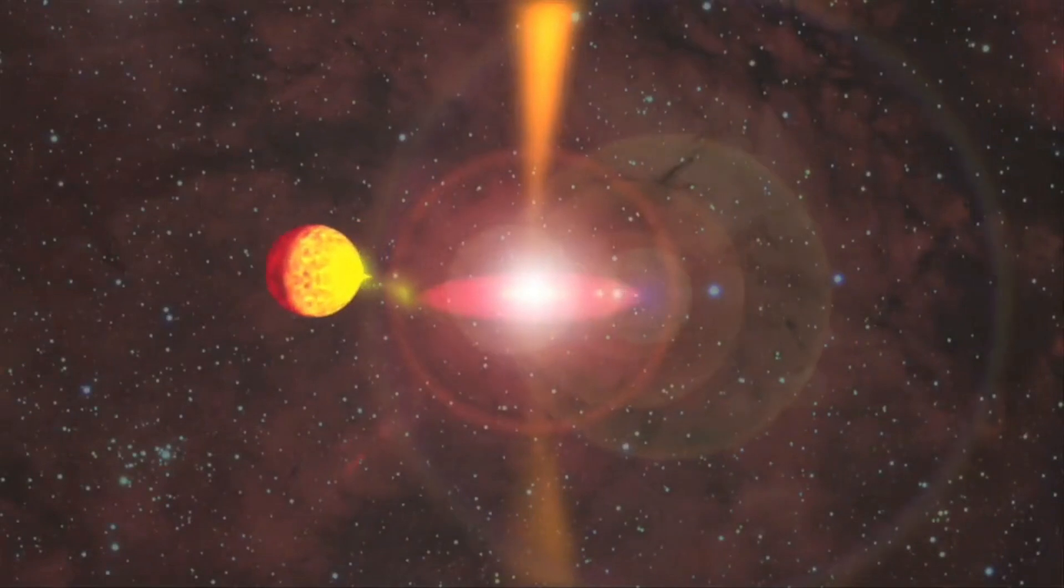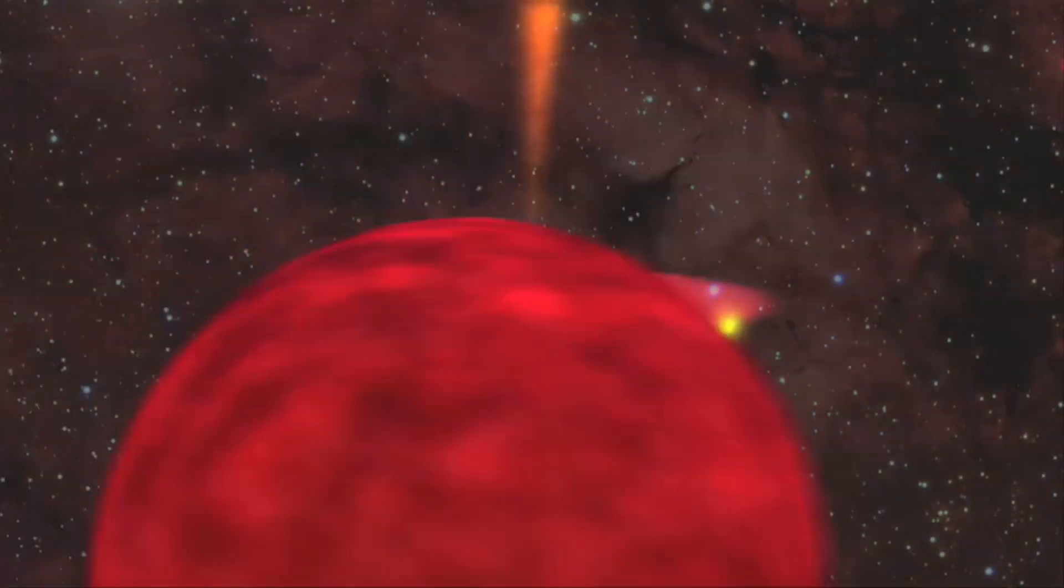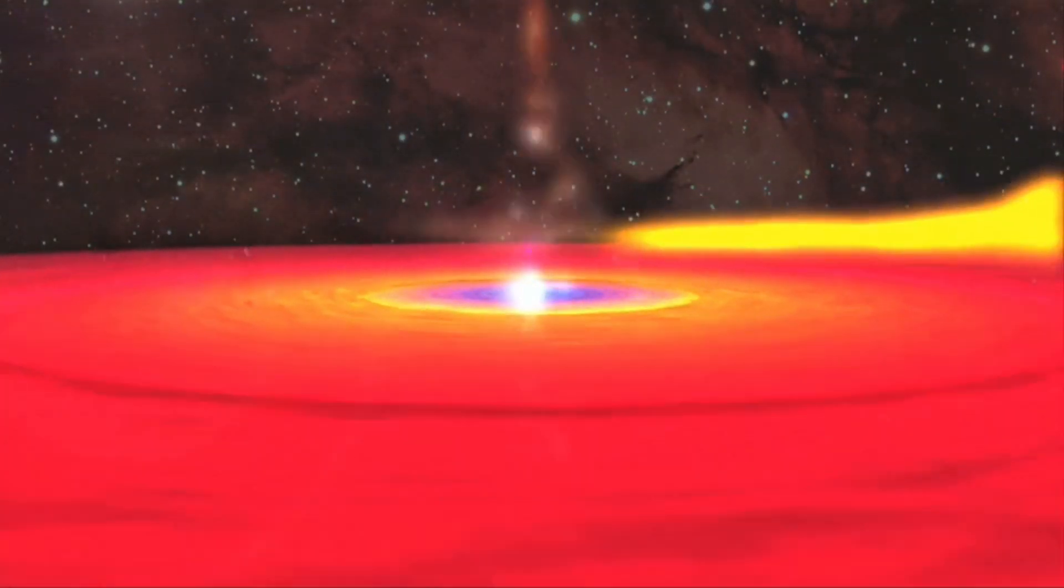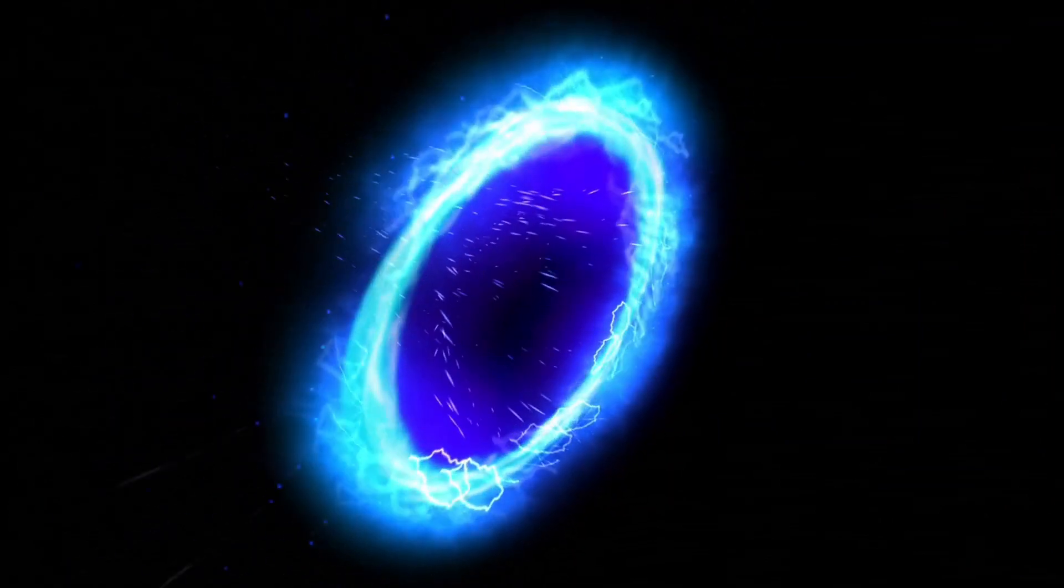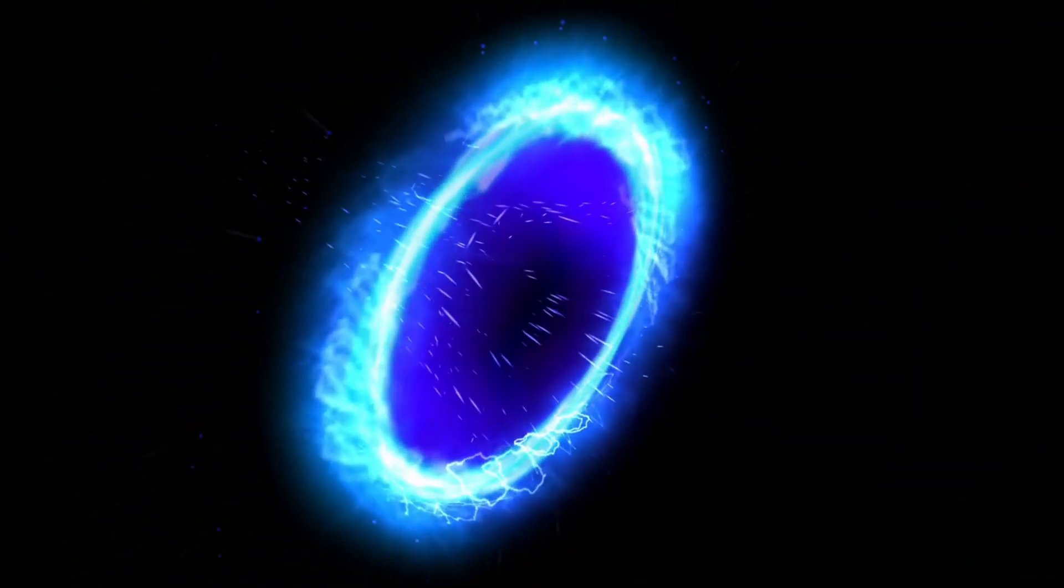Sadly, white holes are just theoretical; there is no definitive proof they exist, yet mathematics could allow one to exist. The most likely way a white hole could be formed is when a black hole singularity compresses into the smallest size predicted by physics, then rebounds as a white hole, spewing all the contents inside of it.